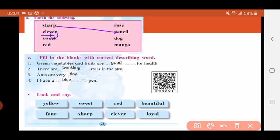Next clever. What are we left with? Rose, dog and mango. From this which we can call clever? A dog. So clever matches to dog.